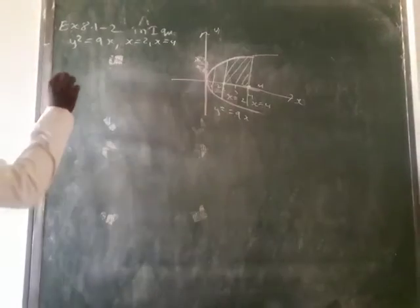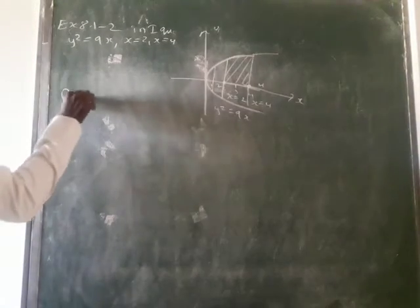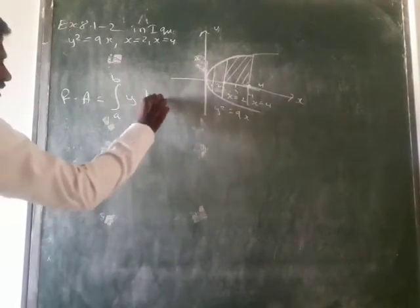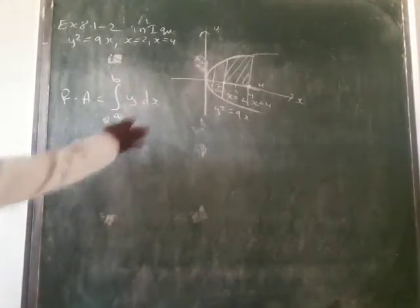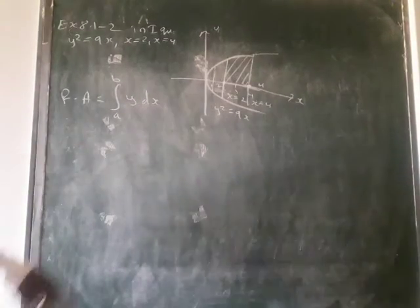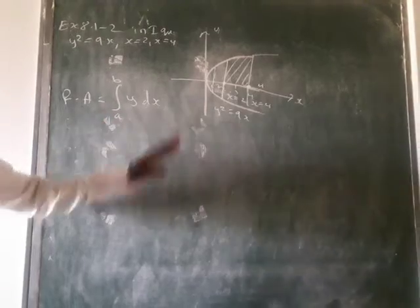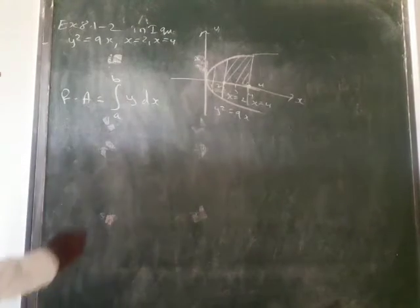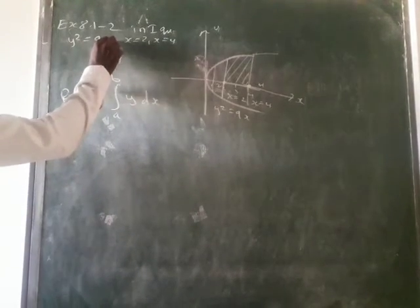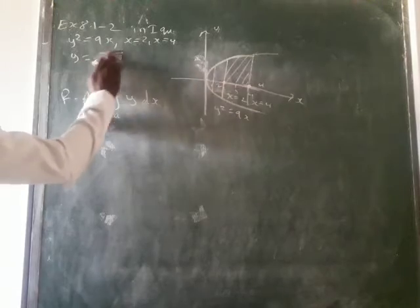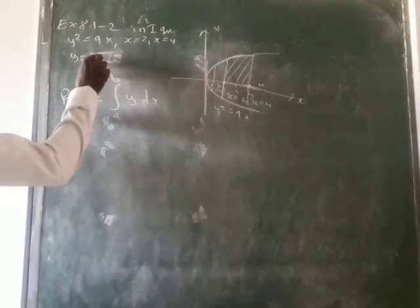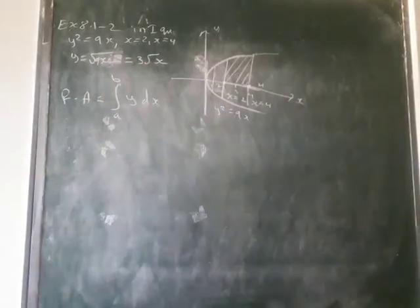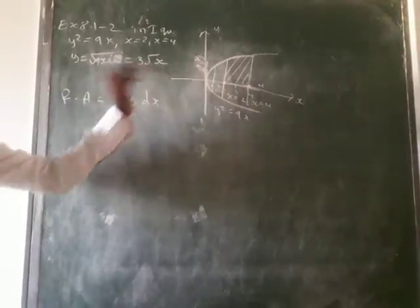The basic formula: the required area equals the integral from a to b of y dx for area above the x-axis, or minus y dx for area below the x-axis. If the fourth quadrant is mentioned, use minus y dx with limits 2 to 4. Since y² = 9x, we get y = √(9x), which can be written as 3√x.